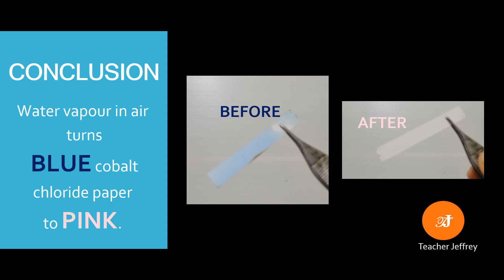After our observation, we can now go to our conclusion. Our conclusion is: water vapor turns blue cobalt chloride paper to pink.